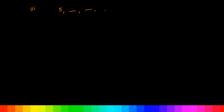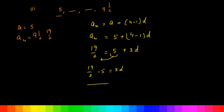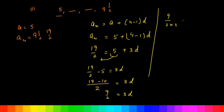Part 3: the series is 5, dash, dash, 9 and 1/2. A = 5 and A4 = 9½ = 19/2. Using An = A + (N - 1)D: A4 = 5 + 3D = 19/2. So 19/2 - 5 = 3D. Taking LCM 2: (19 - 10)/2 = 3D, giving 9/2 = 3D, so D = 3/2.